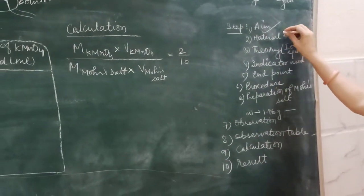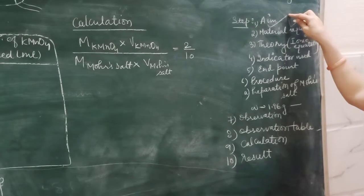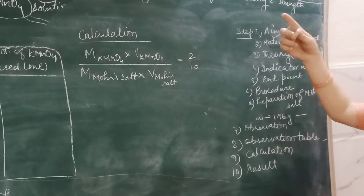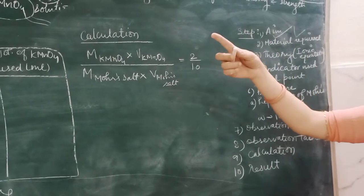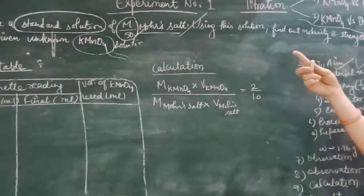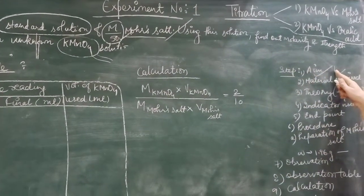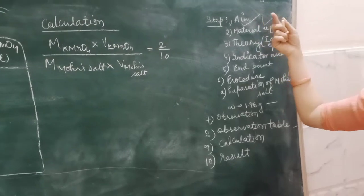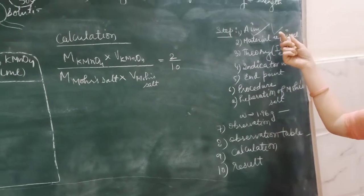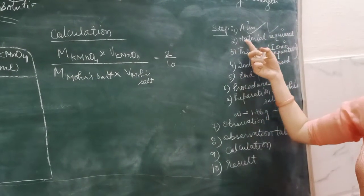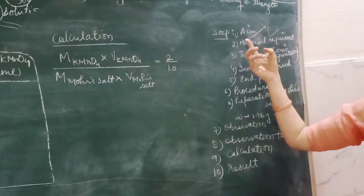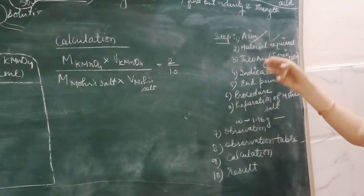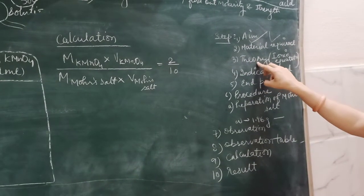You will divide materials into two parts: chemicals required and apparatus. Chemicals include Mohr salt, KMnO4, and sulfuric acid — three chemicals in total. For apparatus, you will use a burette, conical flask, funnel, and pipette.